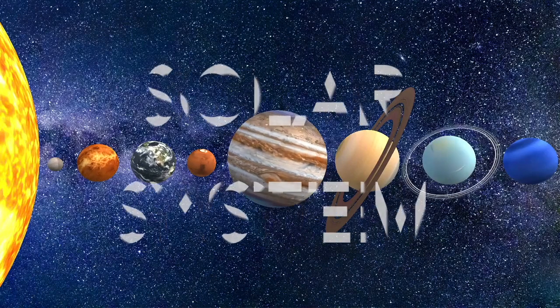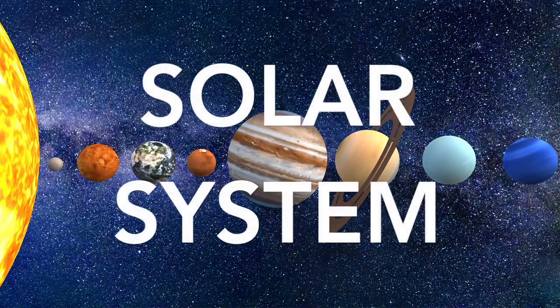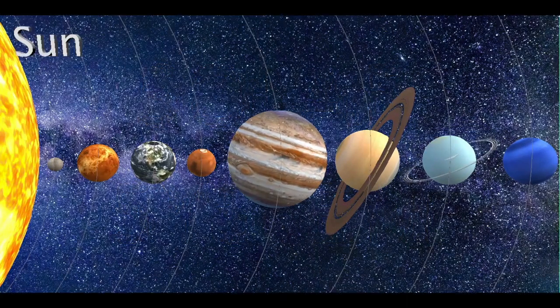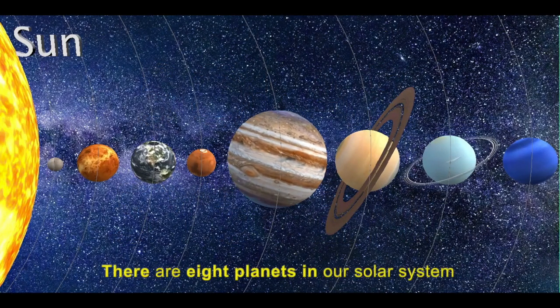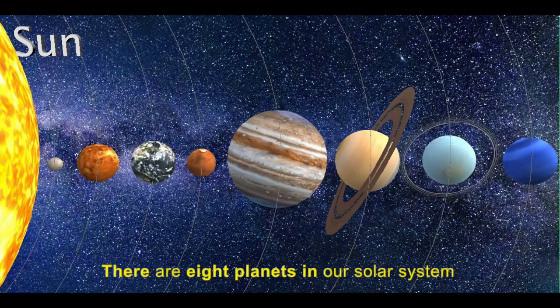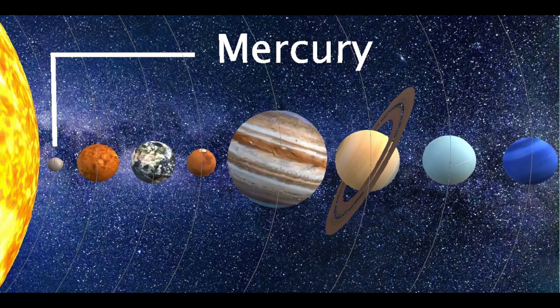Hi Kids! Today we will learn about our solar system. There are 8 planets in our solar system and they move around the sun. First is Mercury.